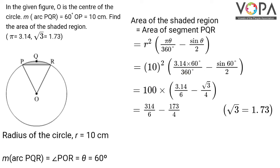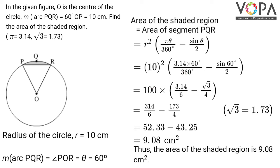314/6 gives 52.33 minus 173/4 gives 43.25, and the subtraction gives 9.08 cm². Thus, the area of the shaded region is 9.08 cm².